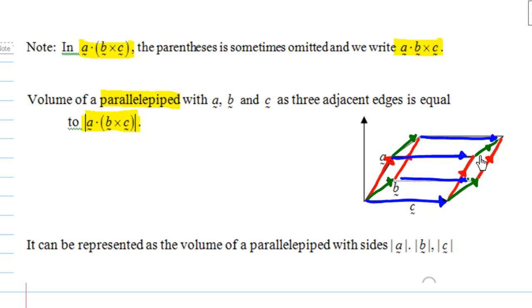This 3D object is called a parallelepiped with edges a, b, and c as three adjacent edges. The volume of this 3D object is the absolute value of a dot b cross c. In short, the absolute value of a dot b cross c is the volume of the parallelepiped with sides length of a, length of b, and length of c.